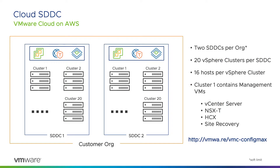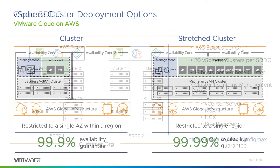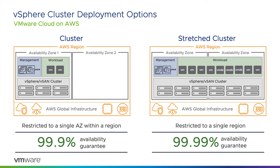An organization can contain multiple SDDCs, and each SDDC can contain many vSphere clusters. There are two vSphere cluster deployment options available. A standard cluster provides three nines of availability and restricts all hosts to a single availability zone within a region — suitable for most workloads and offers a nice balance of risk and cost. A stretch cluster provides four nines of availability and places hosts across two availability zones within a region, with a vSAN witness deployed in a third availability zone. This is ideal for business-critical workloads and customers that wish to protect against a possible AZ failure.